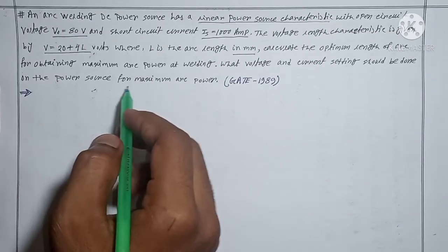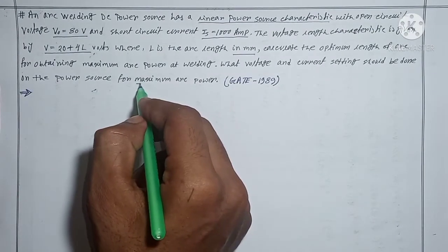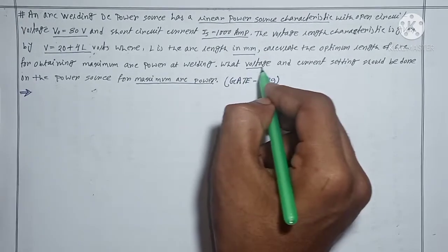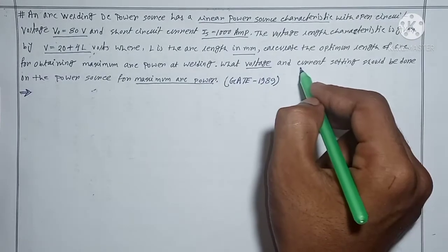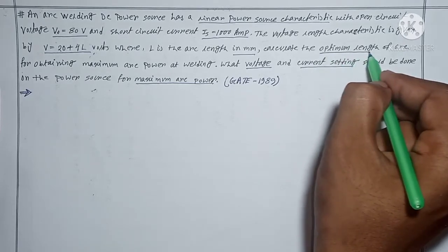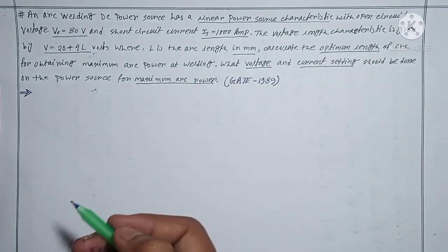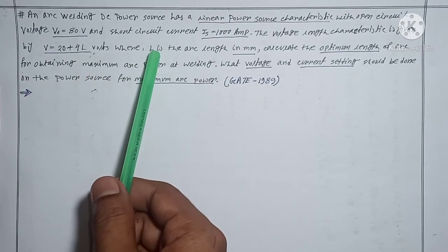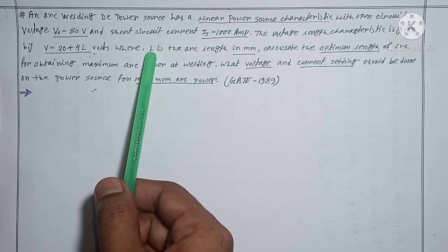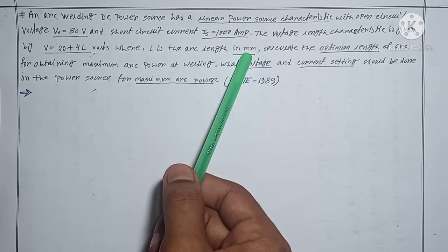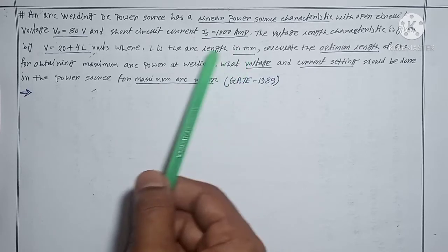Calculate the optimum length of arc for obtaining maximum arc power. What voltage and current setting should be done on the power source for maximum arc power? Also find the optimum arc length — these three things we have to find out. One important note: be careful about the arc length unit, as sometimes the unit is given in one unit and the answer is asked in another.